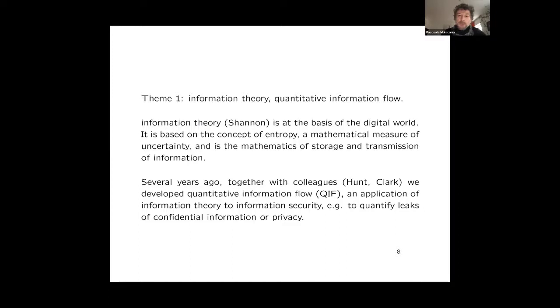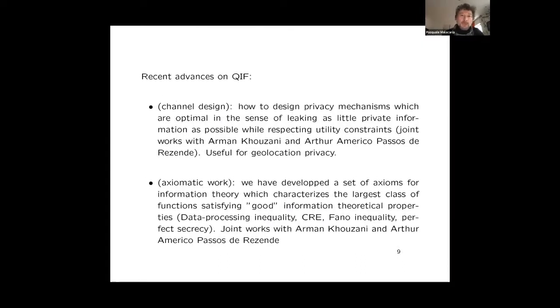Several years ago, together with colleagues Sebastian Ant and David Clark, we developed something called quantitative information flow, QIF, which is an application of information theory to information security. The idea here was to quantify leaks of confidential information or privacy in computer systems. There are a few recent advances on QIF from our group. The first is on channel design. The channel design problem is how to design privacy mechanisms which are optimal in the sense of leaking as little private information as possible, while respecting utility constraints. We've been working with this with Arman Khouzani and Arthur Amerigo. This kind of research has application, for example, in geolocation privacy. If you use geolocation privacy on your mobile, you want to say where you are more or less, because otherwise it would be useless. But sometimes you don't want to say precisely where you are for privacy.